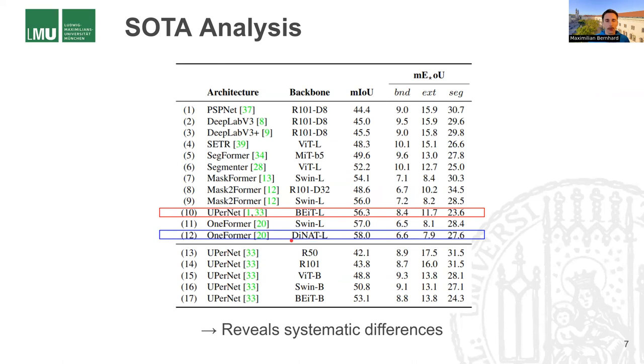And this holds especially for all the models that are based on the principle of mask classification, like Mask-former, Mask2former, and OneFormer. For these models, we can see that they have very low error rates for boundaries and extents. However, they have some weaknesses with respect to the segments, where the error rates are much larger than for BEIT. So this shows us that there are systematic differences between these different architecture classes.